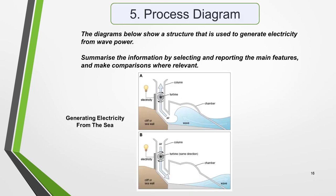Another less frequent question type is the process diagram. It could be a natural process, such as the water cycle, a manufacturing process, or the diagram of a system, such as the central heating system of a house. As before, the first sentence of the question describes the graphic: The diagrams below show a structure that is used to generate electricity from wave power.